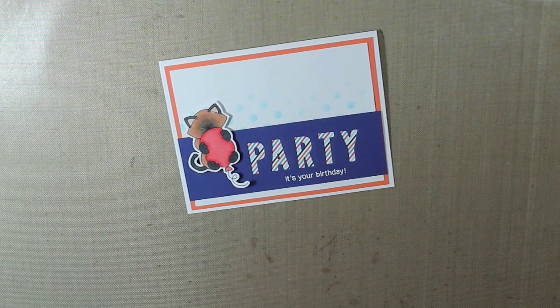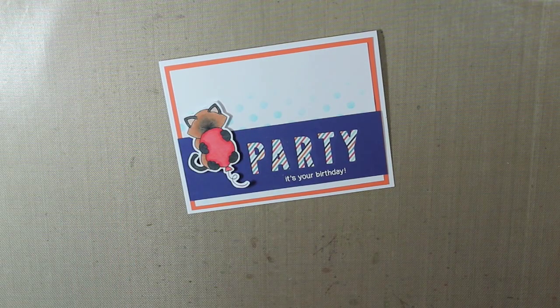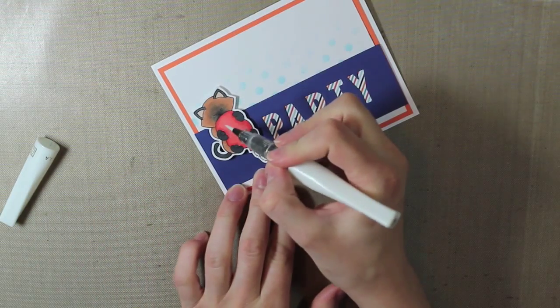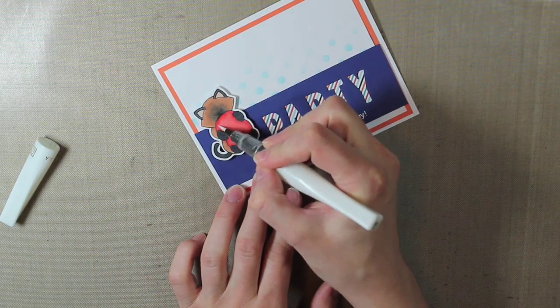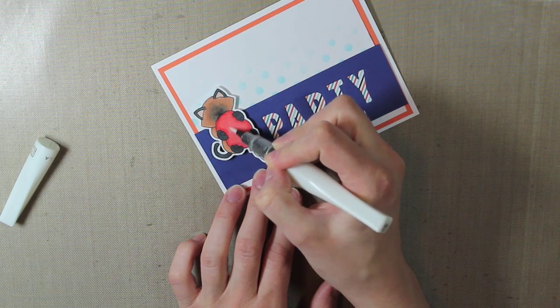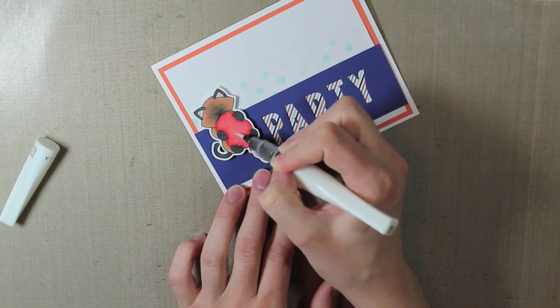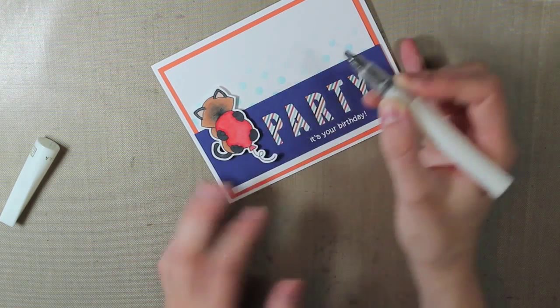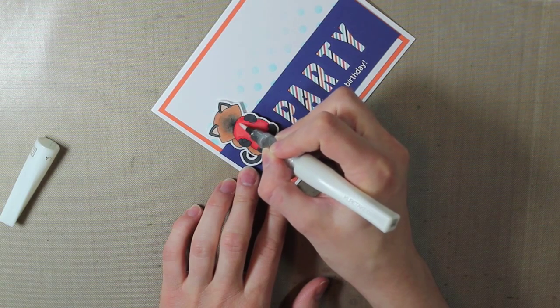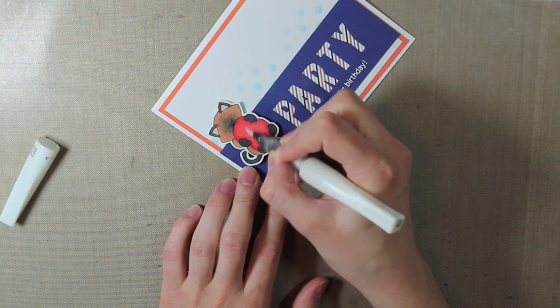And then I am going to cover this balloon with the clear Wink of Stella glitter pen. I'm just going to add a little bit of sparkle to the card and I think it makes the balloon kind of come to life a little bit more. And I did the last 30 day color challenge. I colored one of the images in just like this and I really liked it so that's why I'm using it again on this card.